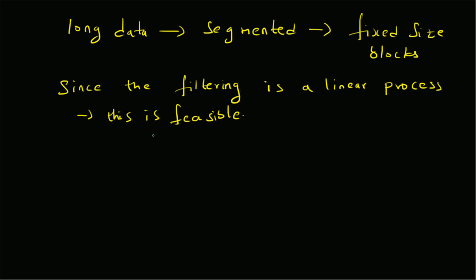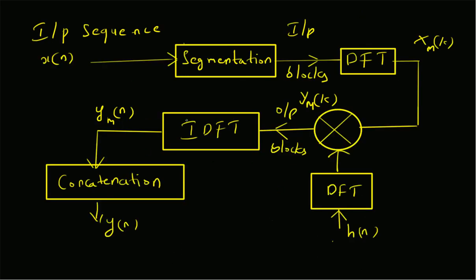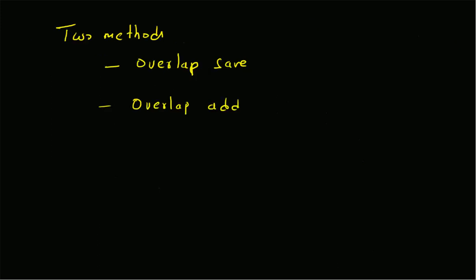We divide the long data into fixed-size blocks. Since the filtering process is linear, this operation is feasible. The block diagram summarizes the whole operation: given x(n), segmentation divides it into input blocks, DFT is applied to get the DFTs of these blocks, which are multiplied with H(k) — the DFT of h(n). The products are segments of the output in frequency domain; applying inverse DFT gives time-domain output segments, which are concatenated to get y(n). The two methods for this are overlap-save and overlap-add, which will be covered in the next video.